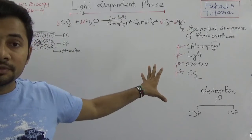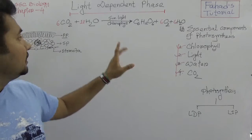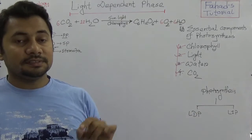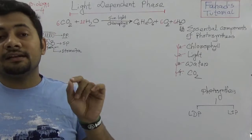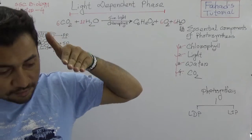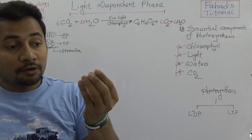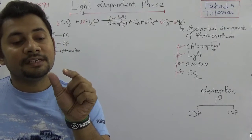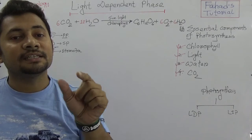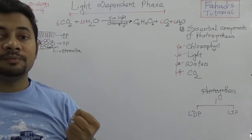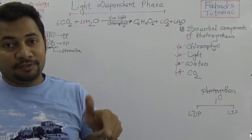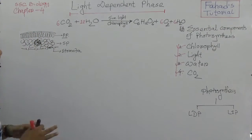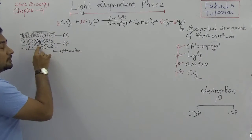In the light-dependent phase, sunlight is essential and mandatory. When light rays fall on the leaf, chlorophyll molecules absorb that energy. The wavelengths absorbed by chlorophyll are around 680 to 700 nanometers. Using that absorbed energy, chlorophyll works on producing ATP and NADPH₂.